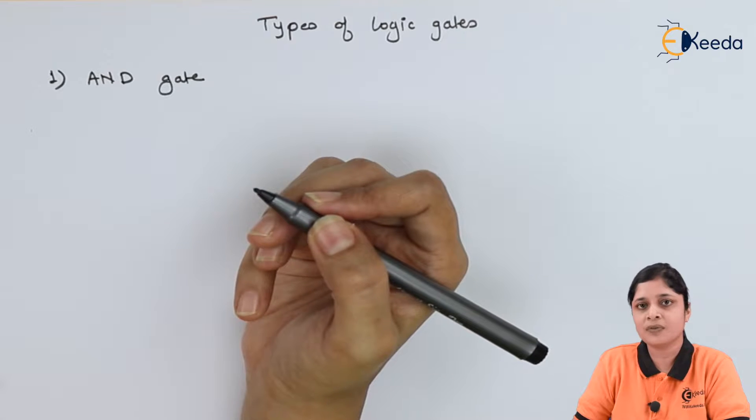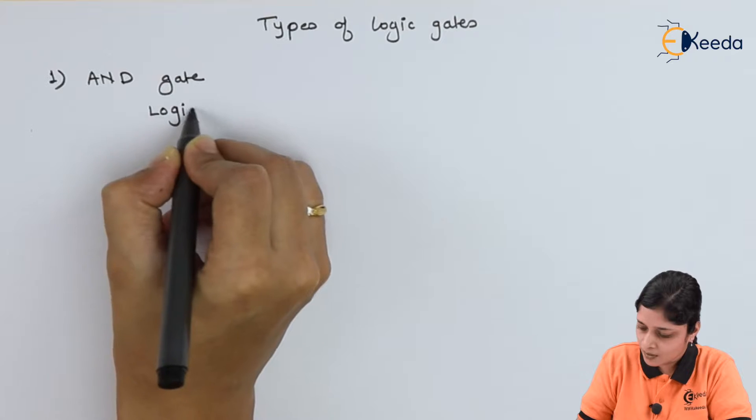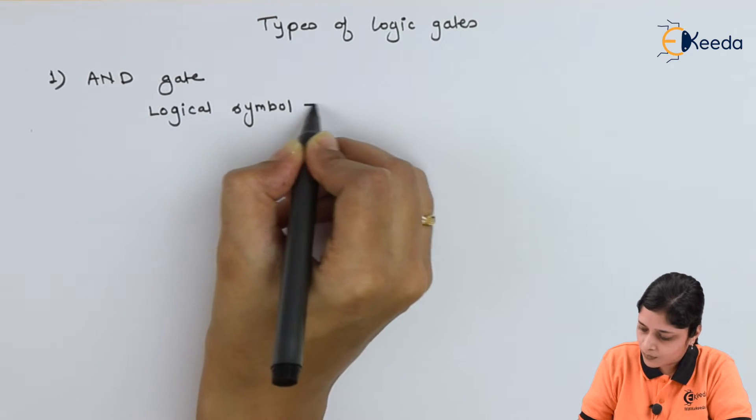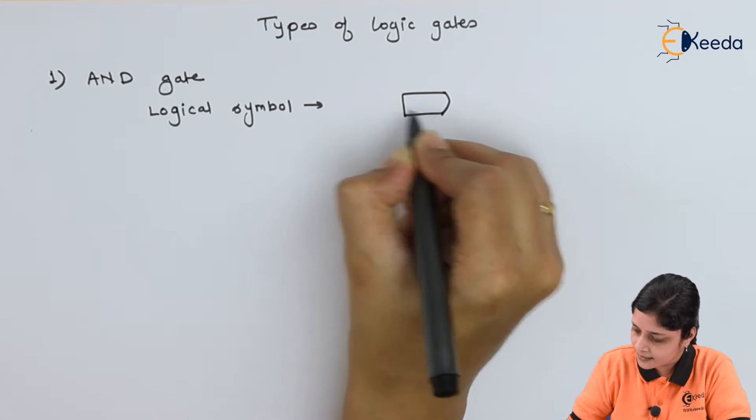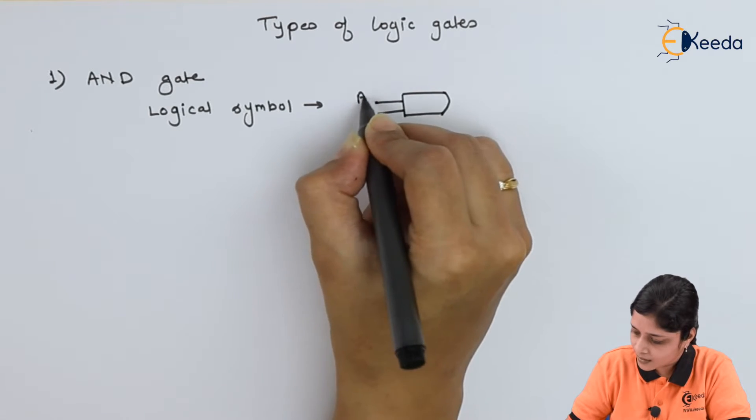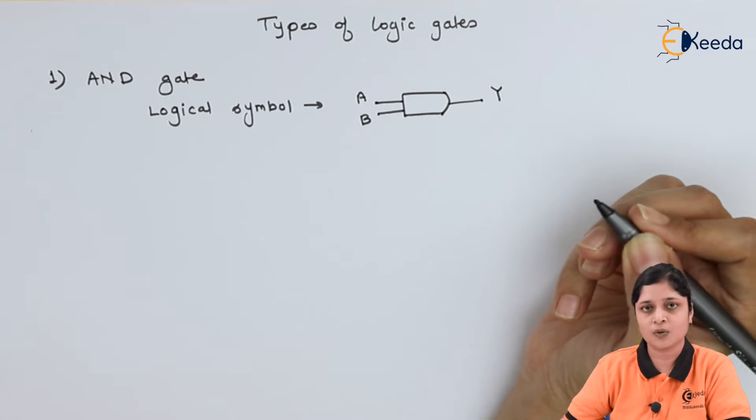Now first of all we will see its symbol. Logical symbol for AND gate is like this. It has two inputs and one output.